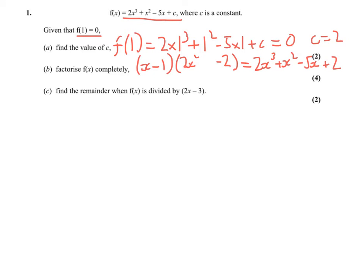Now it's finding the bit in the middle, basically the x coefficient. So if I do minus 1 times 2x squared, I get minus 2x squared, but I want plus 1x squared. So I need to do plus 3x in order to complete that, and then you should be able to factorize that fairly easily.